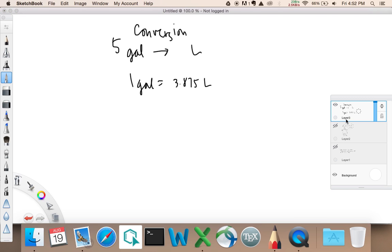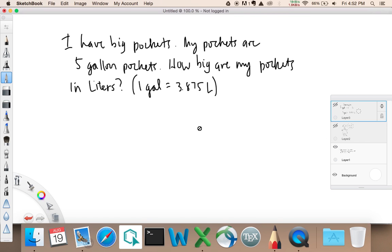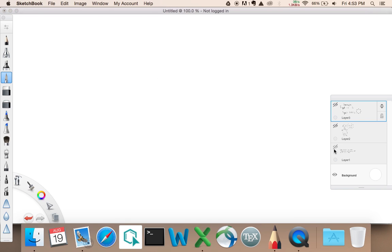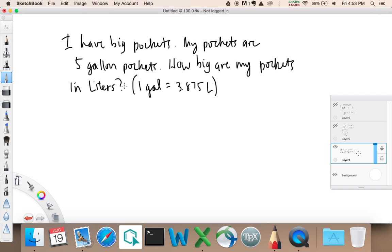It turns out that the problem is probably going to look more like this, where you have sort of a throwaway sentence at the beginning, and then you've got a how big are the blank. So in order to make this a little more spicy, I actually gave it a real sentence here. So let's start out with this one. I have big pockets. My pockets are 5-gallon pockets. How big are my pockets in liters?